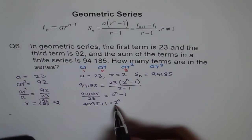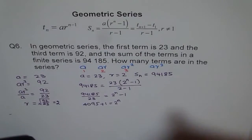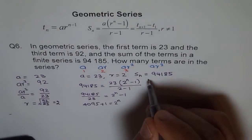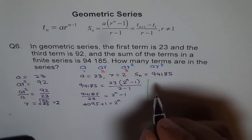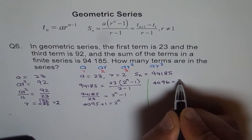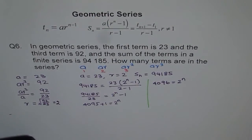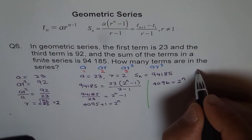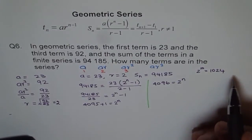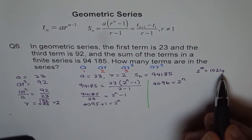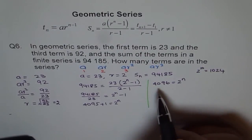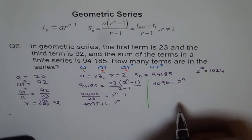Now we need to find what power of 2 gives 4,096. We know 2 to the power of 10 is 1,024. Multiplying once by 2 gives 2^11 equals 2,048, and multiplying again by 2 gives 2^12 equals 4,096. So that is how we get n equals 12.